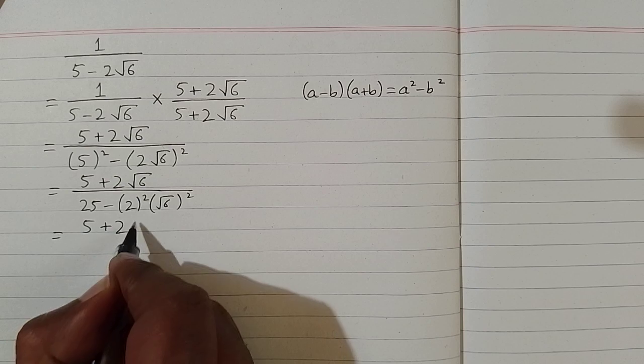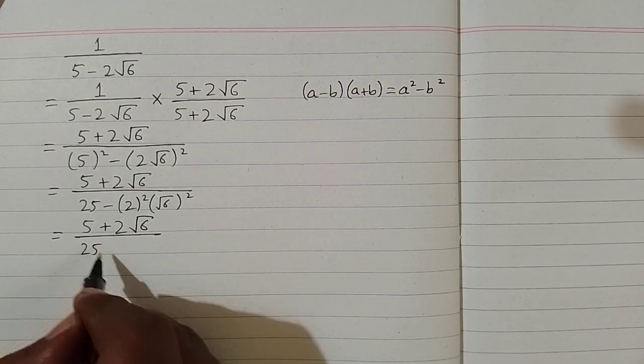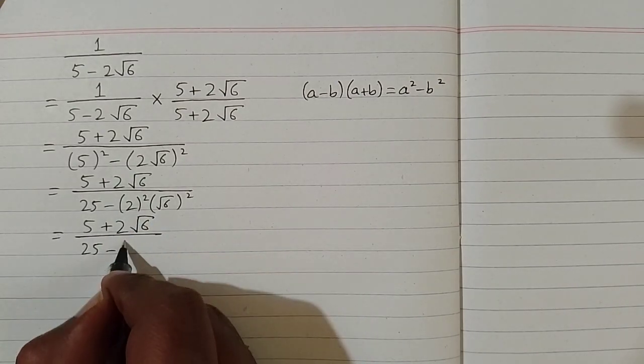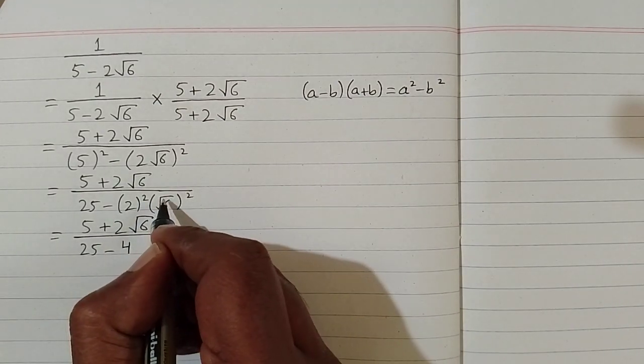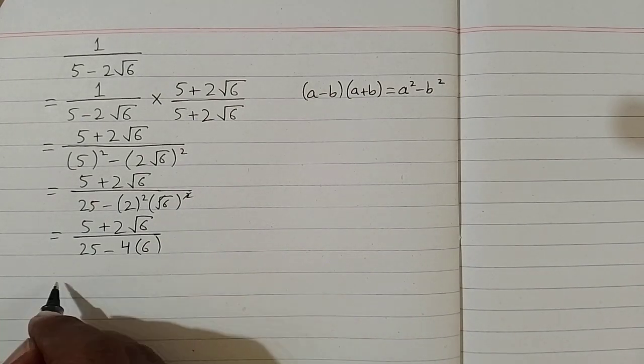Now we have 5 plus 2 square root of 6 upon 25 minus square of 2 is 4. And here we can cancel square root and square. So we have 6.